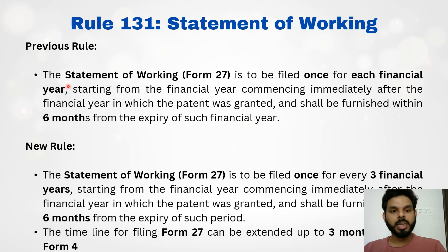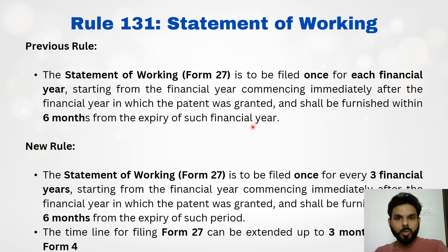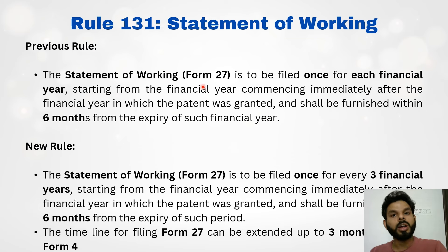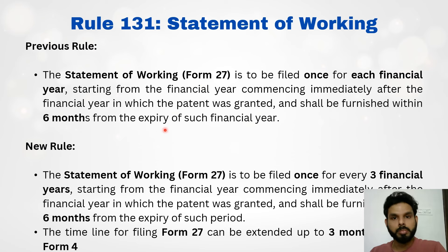The next amendment is in Rule 131, that is, statement of working. The previous rule was that the statement of working, filed in Form 27, is to be filed once for each financial year, starting from the financial year commencing immediately after the financial year in which the patent was granted, and shall be furnished within six months from the expiry of such financial year. The applicant had to submit Form 27 each year, detailing the working of the patent, within six months from the expiry of the relevant financial year. This requirement has been relaxed by the new patent amendment rules.